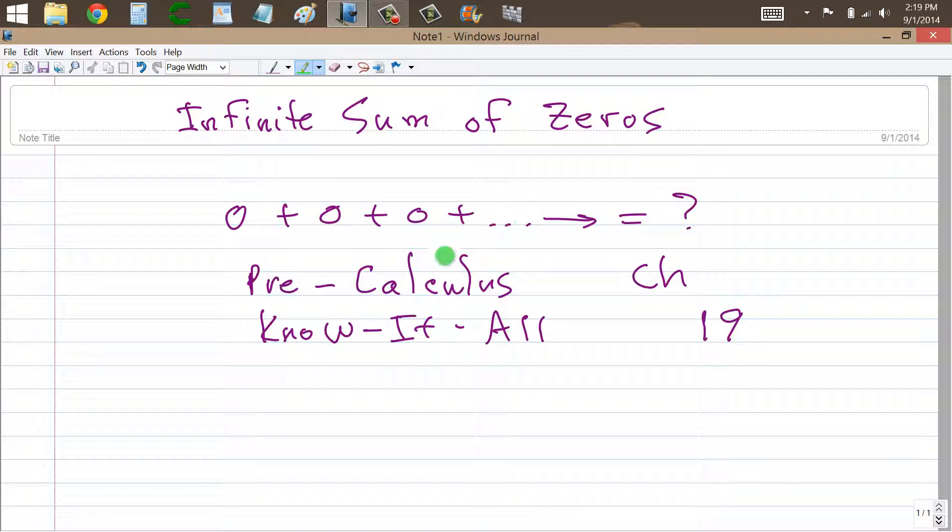the limit is zero, which is true. Every time the partial sums is zero, so the limit is in fact zero.